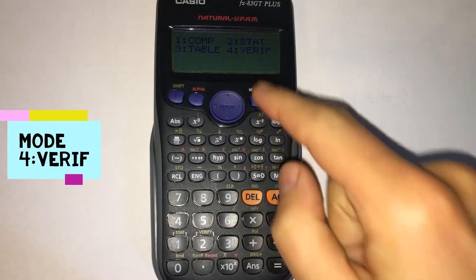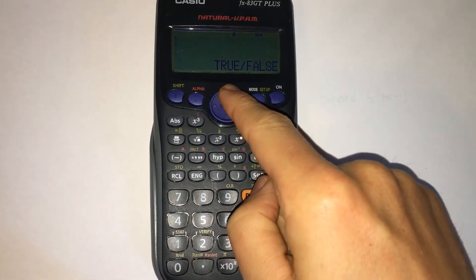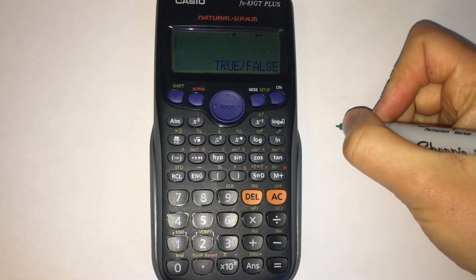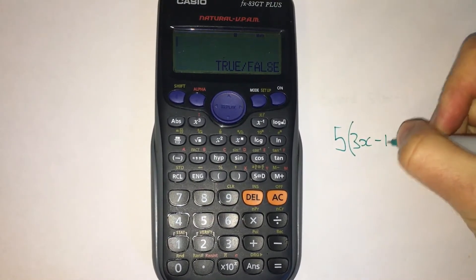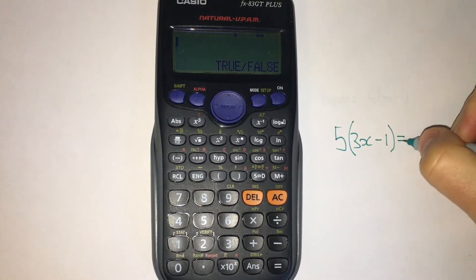So you press four and here we have true or false. Let's say the question is expand five brackets three x minus one, and we've done our workings out and we've worked out that this is fifteen x minus five.